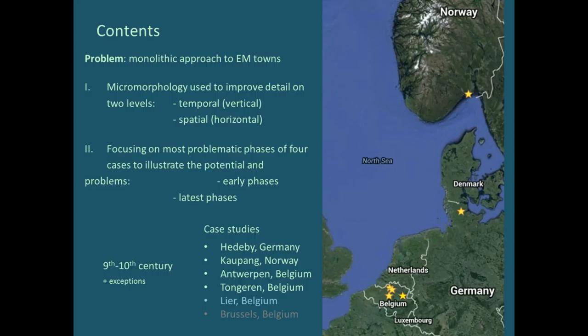My talk will consist of two parts. The first will be on how micromorphology can be used to improve and maybe bypass this view of towns as monolithic entities by looking at different phases — on two levels. I'll illustrate each one with just one example: the first on the temporal scale, the second on the spatial scale. The second large part will focus on phases that Sven and Pieter Young have already talked about, with one example for each phase and brief mentions of others.